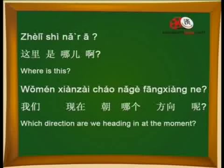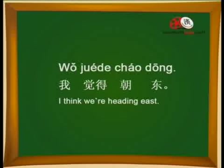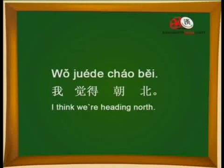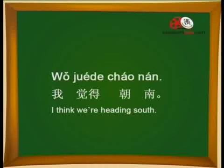这里是哪儿啊? — Where is this? 我们现在朝哪个方向呢? — Which direction are we heading in at the moment? 我觉得朝东. — I think we're heading east. 我觉得朝西. — I think we're heading west. 我觉得朝北. — I think we're heading north. 我觉得朝南. — I think we're heading south.